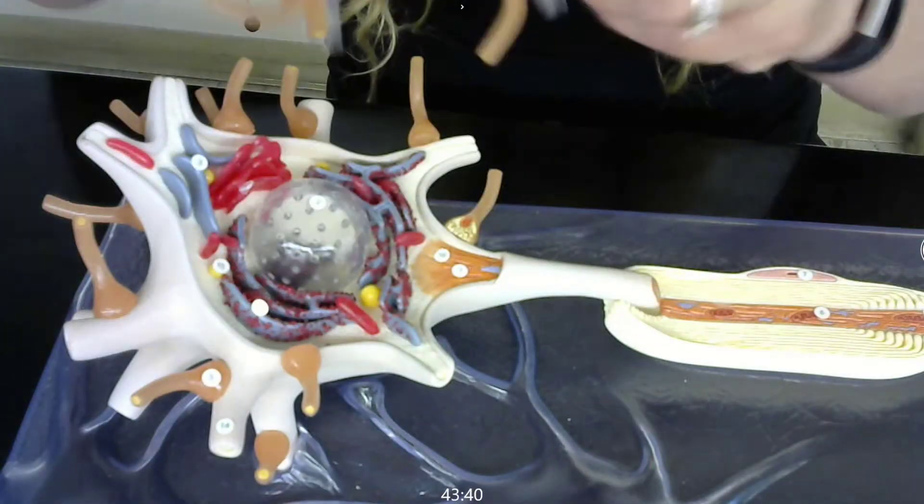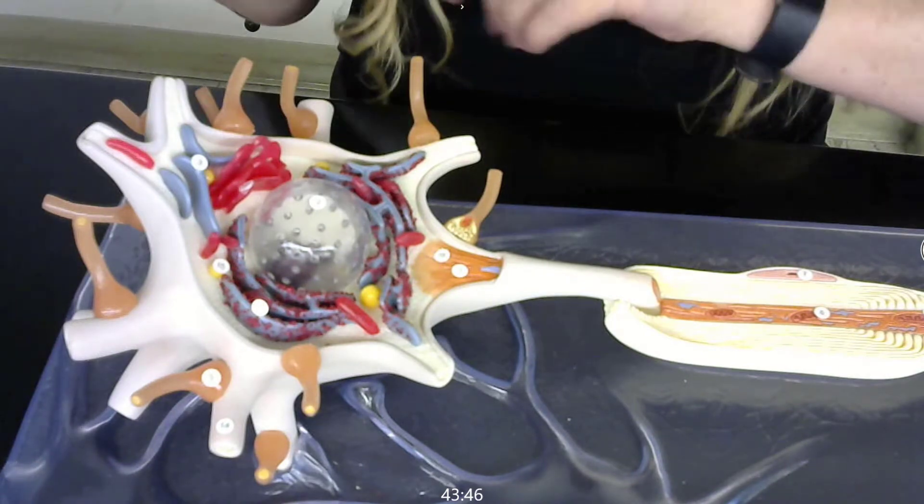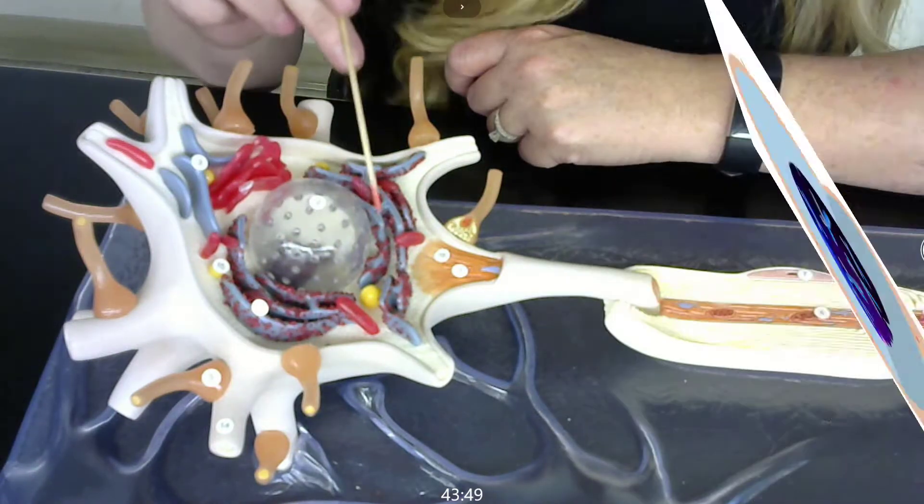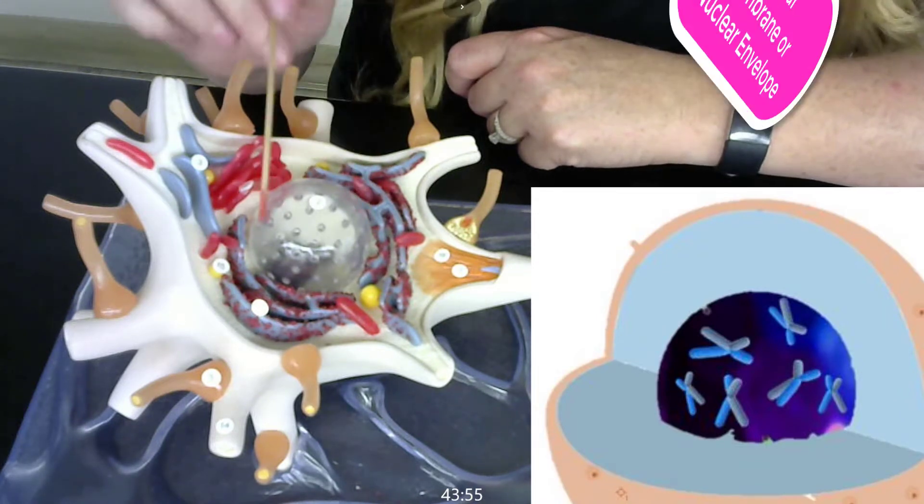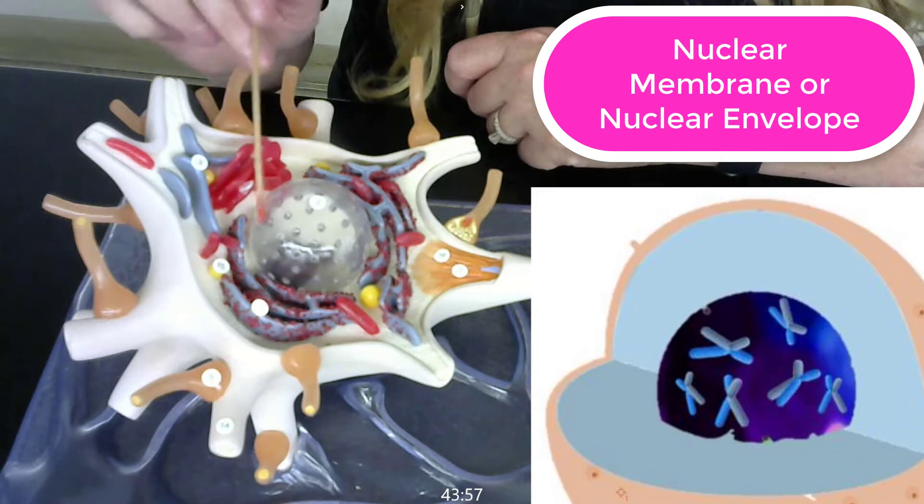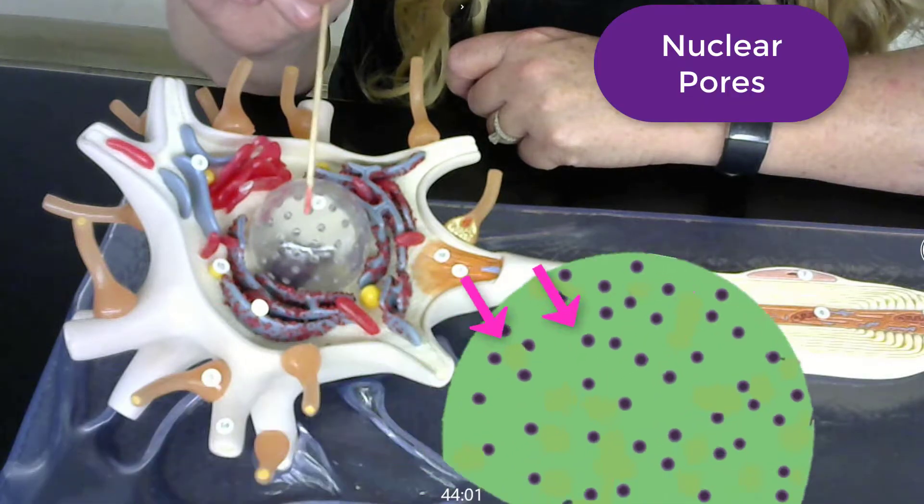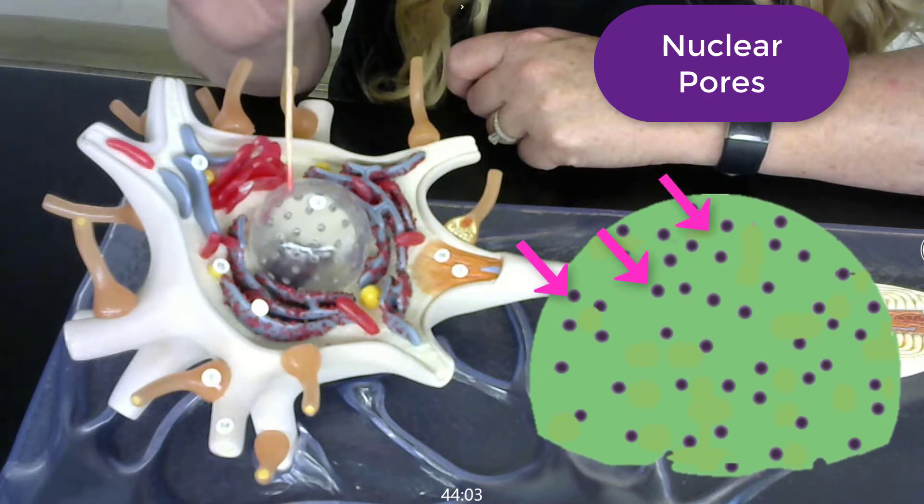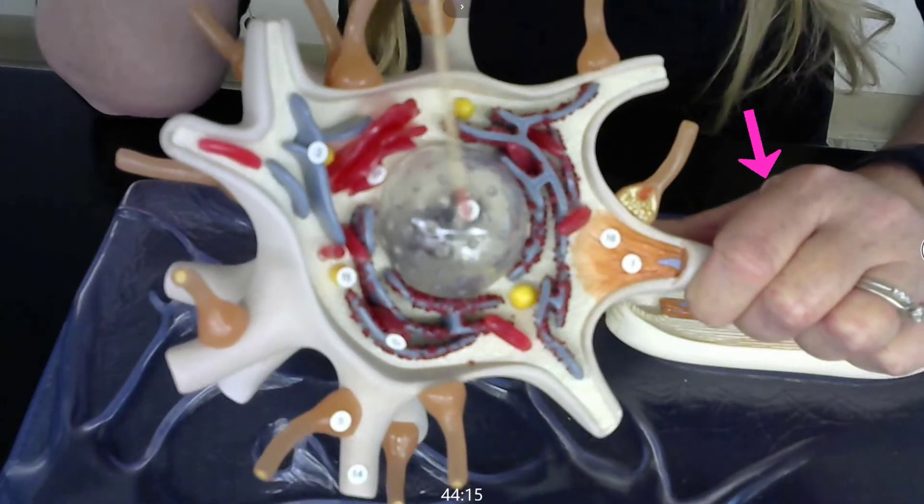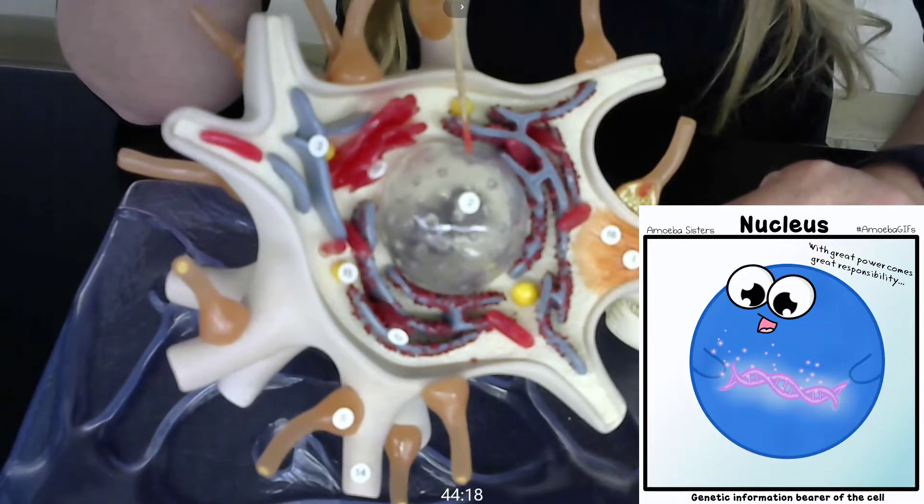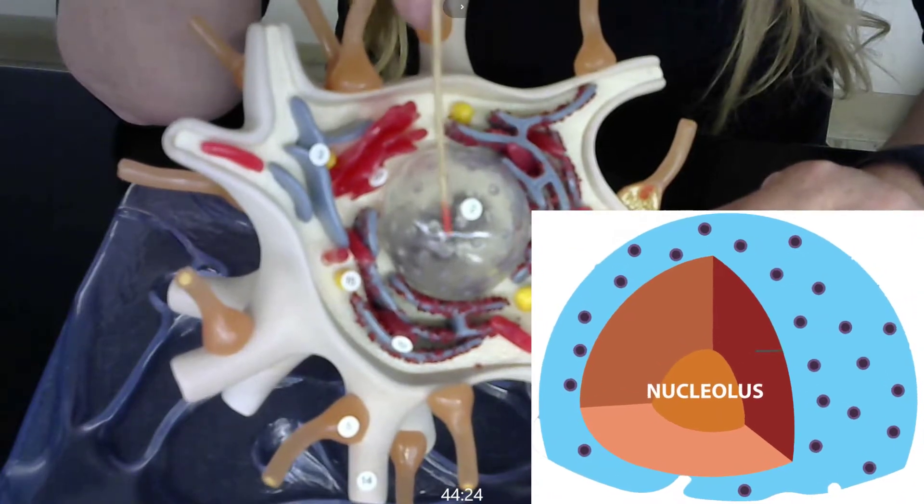Now if I were to take this off, I can see the structures inside of the neuron. Here is the nucleus, the membrane of the nucleus. We could call the nuclear membrane or the nuclear envelope, and we see that we have nuclear pores here, which are these tiny indentations. Now inside of the nucleus, I have the chromatin, which is the genetic material of our neuron, and I also have the nucleolus.